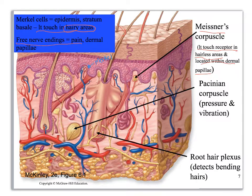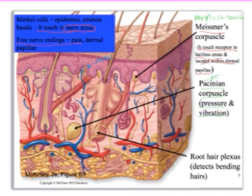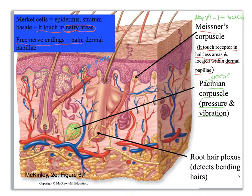Free nerve endings aren't pictured here, but they snake up into the dermis — they're really thin and tiny — and they detect pain. They are also located in the dermal papilla. Now we've got the Pacinian corpuscle, which detects deep pressure and vibration. Meissner's does light touch — like a caress — while P for Pacinian is for pressure. They are located deeper in the dermis. To me they look like tree rings. When you feel music in your body — like you can feel someone's bass in the car next to you — that's what's picking it up: the Pacinian corpuscle.